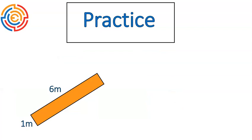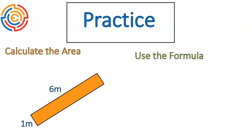Let's try one where I put the rectangle on an angle like this. Go ahead and use that formula length times width to calculate the area of this rectangle. Our area is length times width. Length is six, width is one. Six times one is six — six square meters. And that's exactly how we calculate the area.